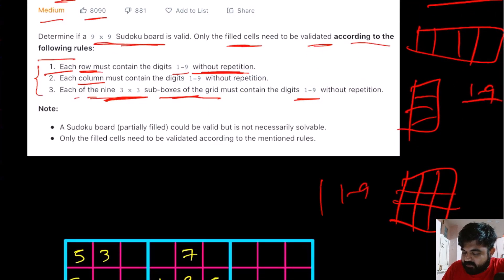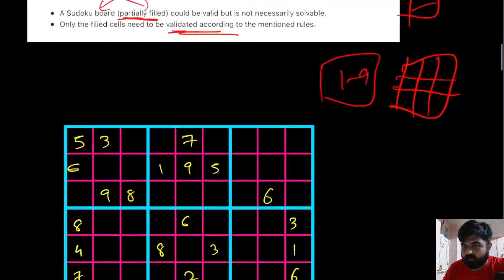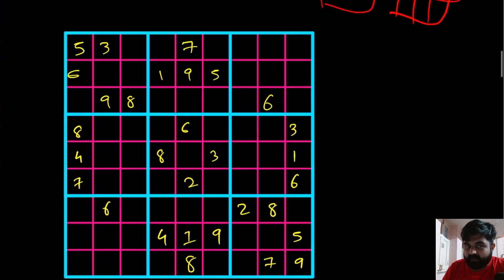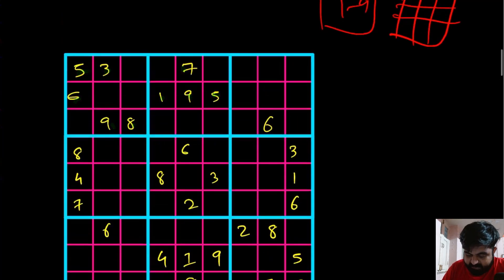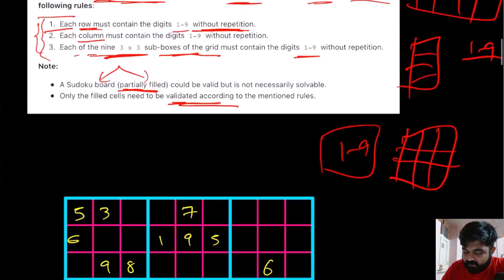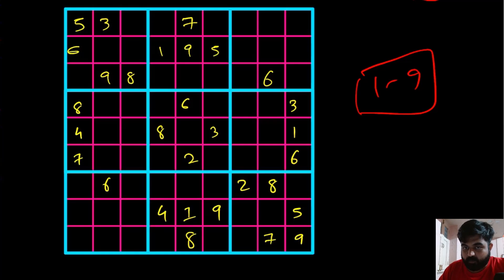We are told that the sudoku board is partially filled and we need to only check the board based on the filled items. It could be possible that we cannot complete the entire sudoku, but given the filled elements, if they at least satisfy these three definitions — every single row, every single column, and every single box all have unique elements one to nine — then we can determine that this sudoku board is valid.